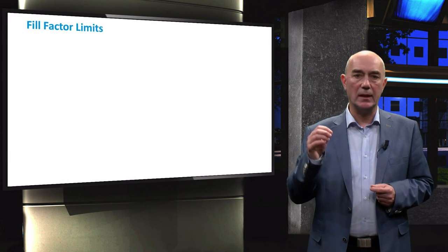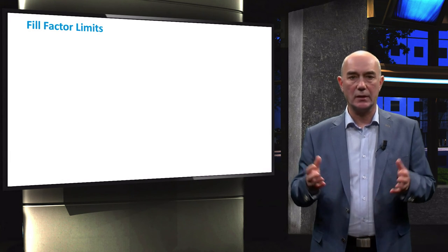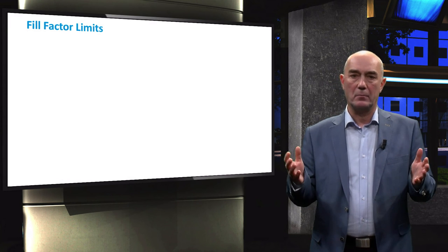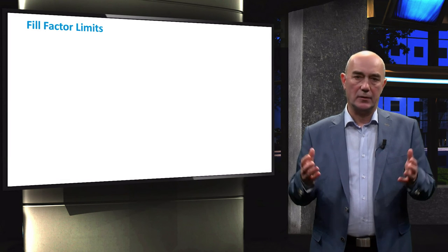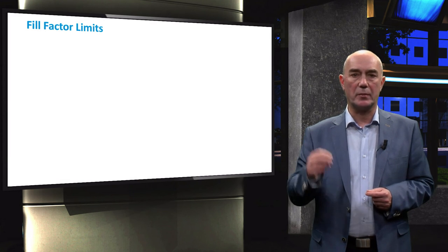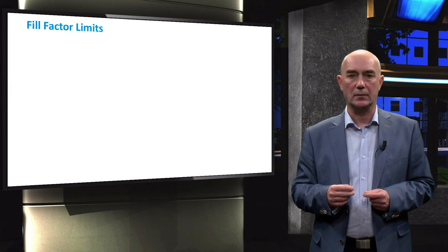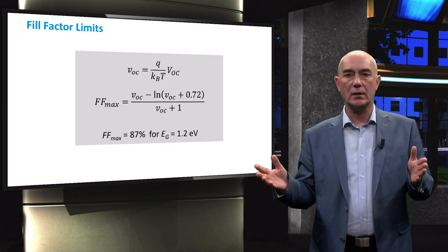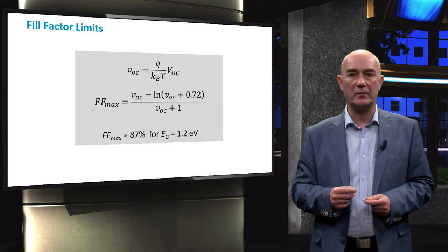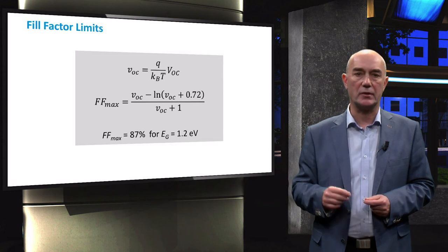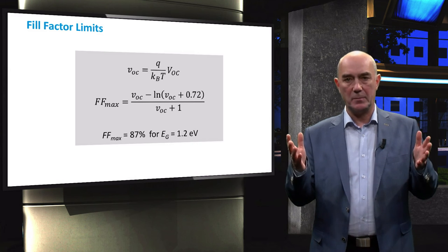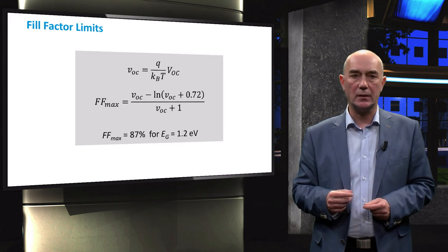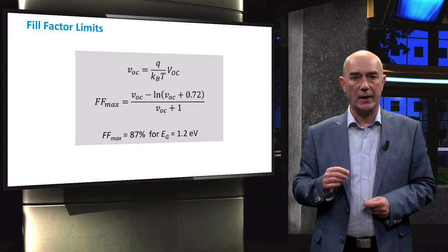So we have now looked at the limits of current and voltage that solar cells with different absorber can deliver. But what about the fill factor? There is not a real theoretical approach to the limit of the fill factor, but we can use an empirical approach. From this equation, we can calculate the maximum fill factor for a given VOC. For an absorber with the band gap of 1.2 eV, the maximum fill factor is 0.87.